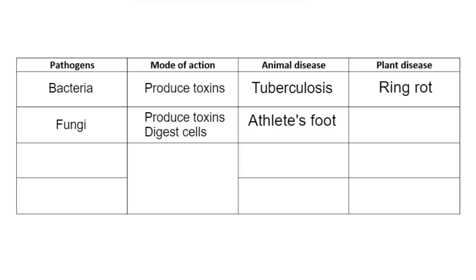A typical example of an animal fungal disease is athlete's foot. The fungi are found in warm and moist areas of the foot, for example between the toes, and they start digesting some of the cells and skin there, causing lots of itching and pain in that area.